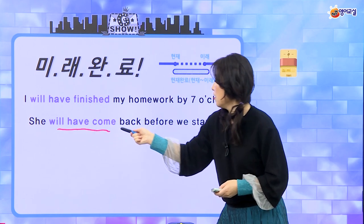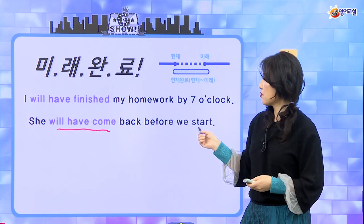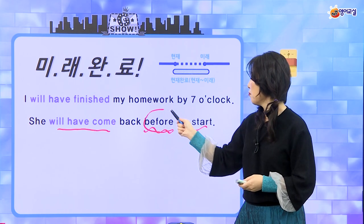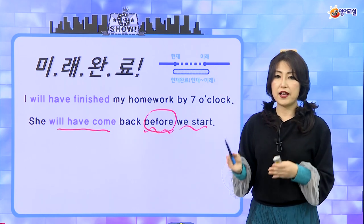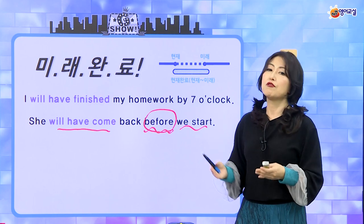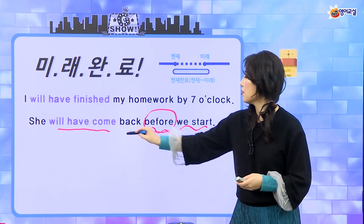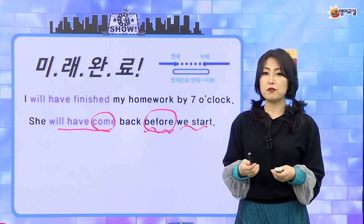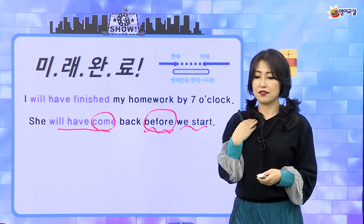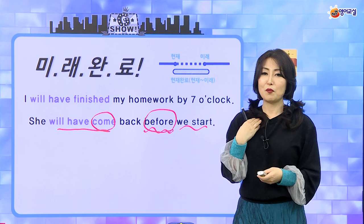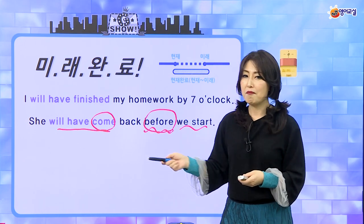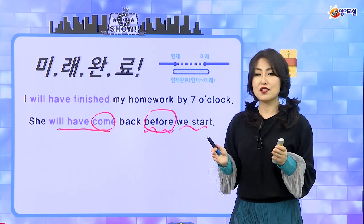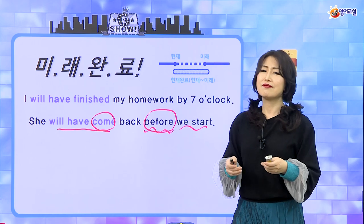'She will have come back before we start.' 그녀는 우리가 시작하기 전에 돌아올 거야. 그러니까 그녀가 돌아오는 일이 다 우리가 시작하기 전에 완료될 거야라는 이야기를 하는 거예요. 근데 여기 come이 이상해요, 분명히 PP라고 했는데. 그래서 come의 3단 변화는 come - came - come이라서 과거 분사와 현재 원형의 형태가 같아요. 기억해야 돼요.